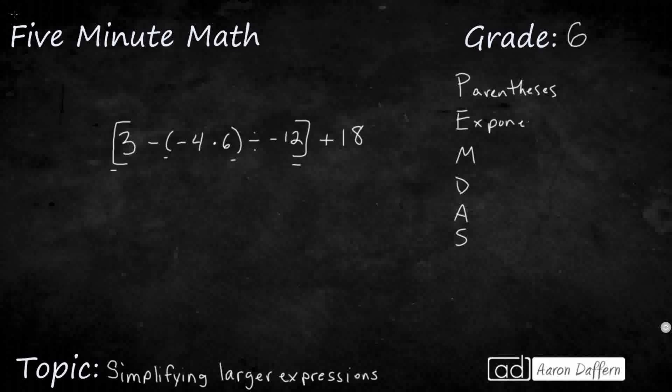We have no exponents to deal with in this particular problem. One thing I always want to make sure we understand is that multiplication and division are inverse operations, which means they're equal. They could be done in either order, left to right. Same with addition and subtraction. So that means you can subtract before you add if you come to it first, left to right. Same with division, you can divide before you multiply if you come first to it, left to right.